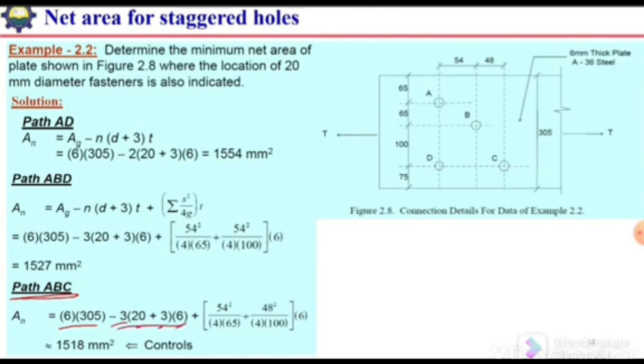Then we need to add the factor s²/4g for these two staggers. For the first case, the stagger is 54, gauge is 65. For B to C we have stagger 48, so 48² divided by gauge length, which is again 100, multiplied by 6, the thickness of the plate. In this way we can calculate the net area for path ABC.